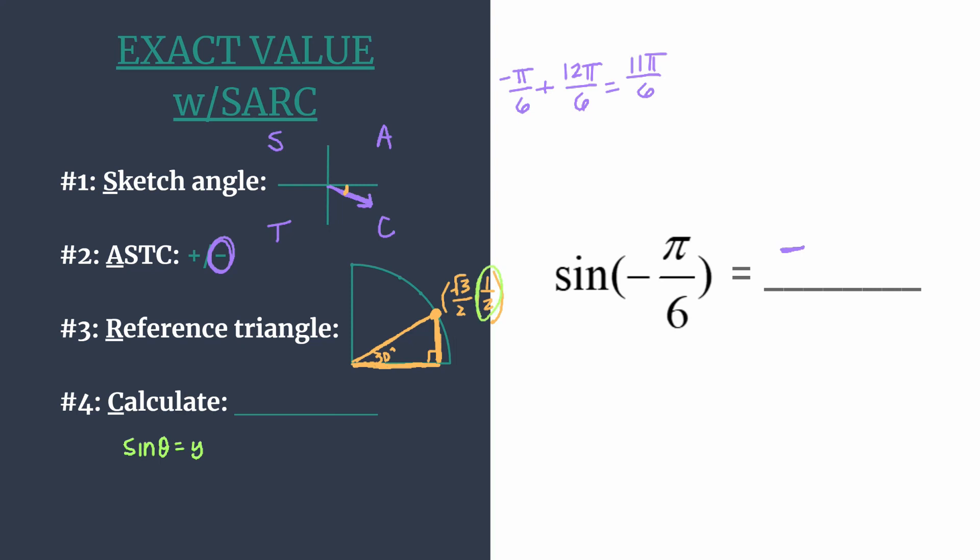Okay, so we can look at our y coordinate, the value will be 1 half. We've already decided that our final answer will be negative because this is sine in the fourth quadrant. So our final answer is negative 1 half for the sine of negative pi over 6.